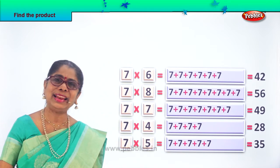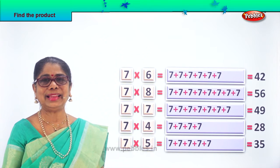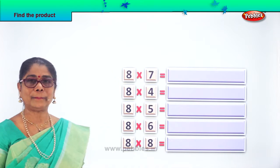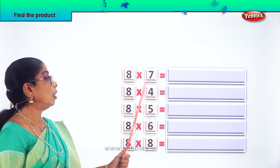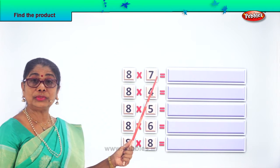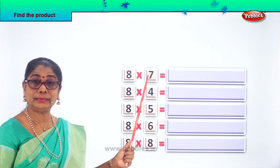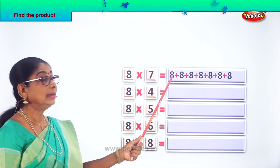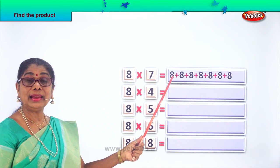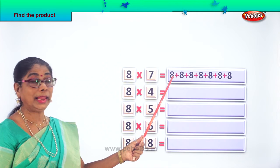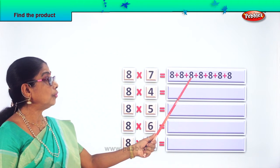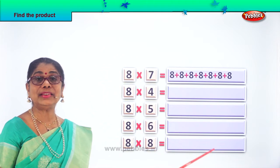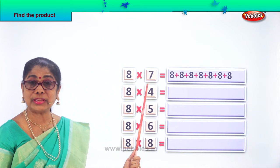Did you enjoy the exercise? Let's look at another exercise. You are going to find the product of 8 into 7. What are 8 sevens? 8 seven times — put the 8, 1, 2, 3, 4, 5, 6, 7 times. What is 8 into 7?